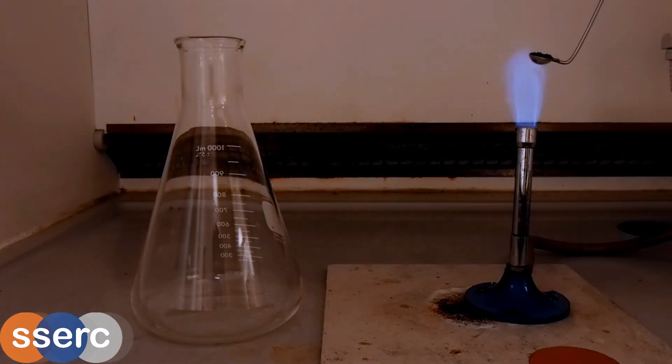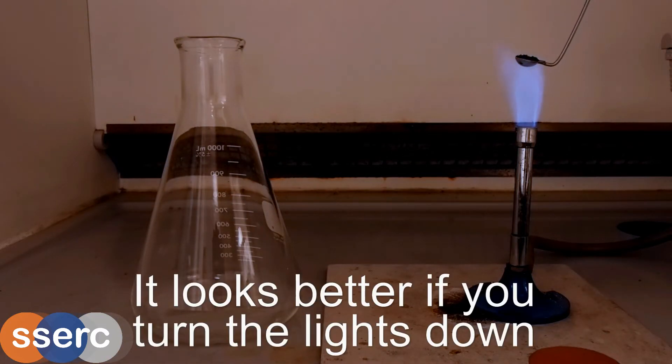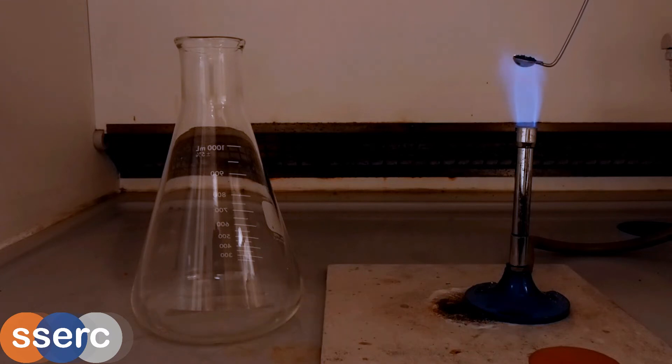Then take a deflagrating spoon of the chromium oxide and heat it strongly on a Bunsen burner. Once it's hot, you'll see the spoon glowing red and some sparking on the oxide. Pour it into the flask of ammonia vapor.